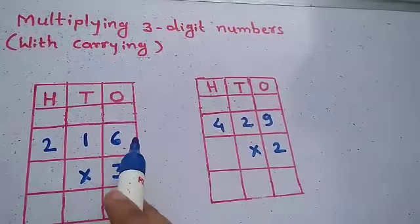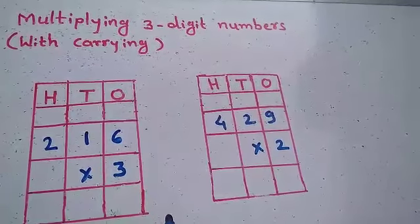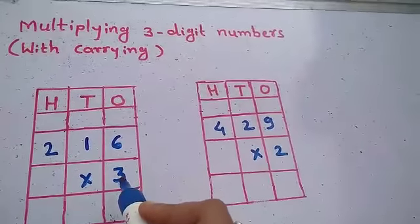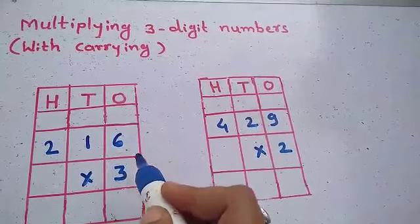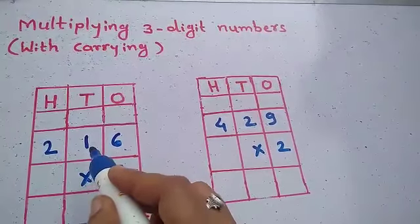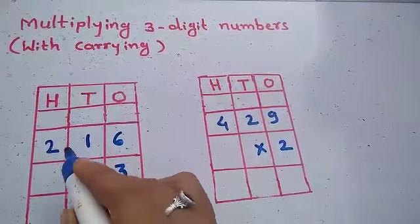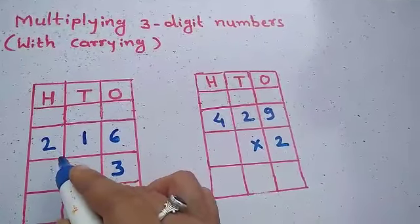आज हम multiplication करने वाले है. 3 digit number को हम 1 digit से multiply करने वाले है. तो हम first 3 से 6 को multiply करेंगे. बाद में 3 से हम 1 को multiply करेंगे और बाद में 3 से हम 2 को multiply करेंगे.